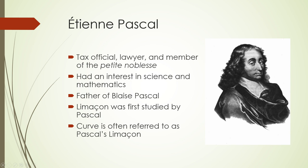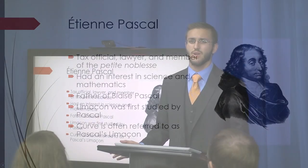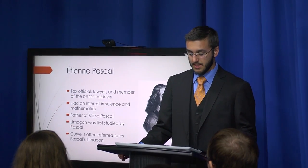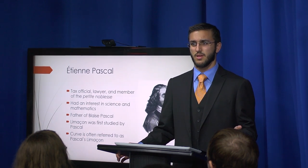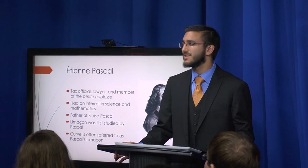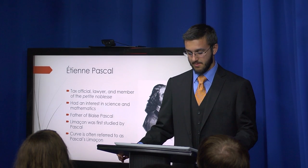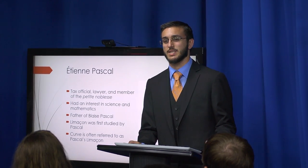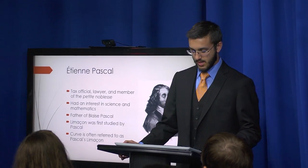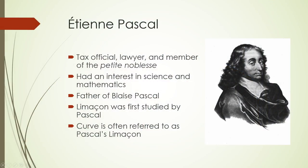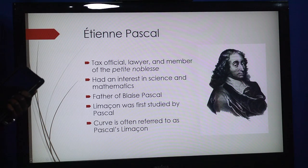The first one is Pascal. He's a tax official, lawyer, and a member of the Petite Noblesse, which is a kind of upper class — upper class landowners. His two main interests were science and mathematics. He is the father of Blaise Pascal and was the first to study the limaçon. This curve is also referred to by his name.